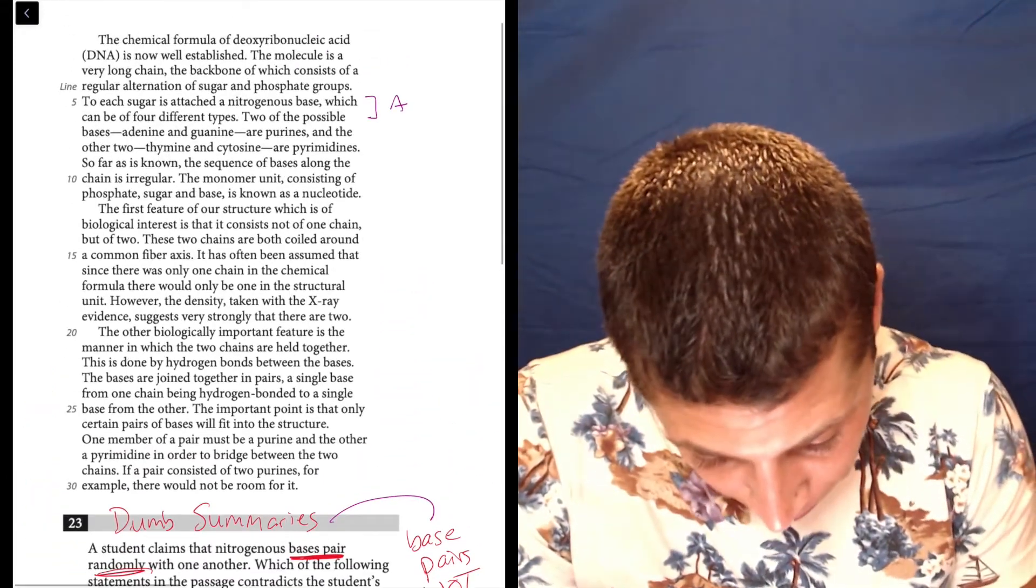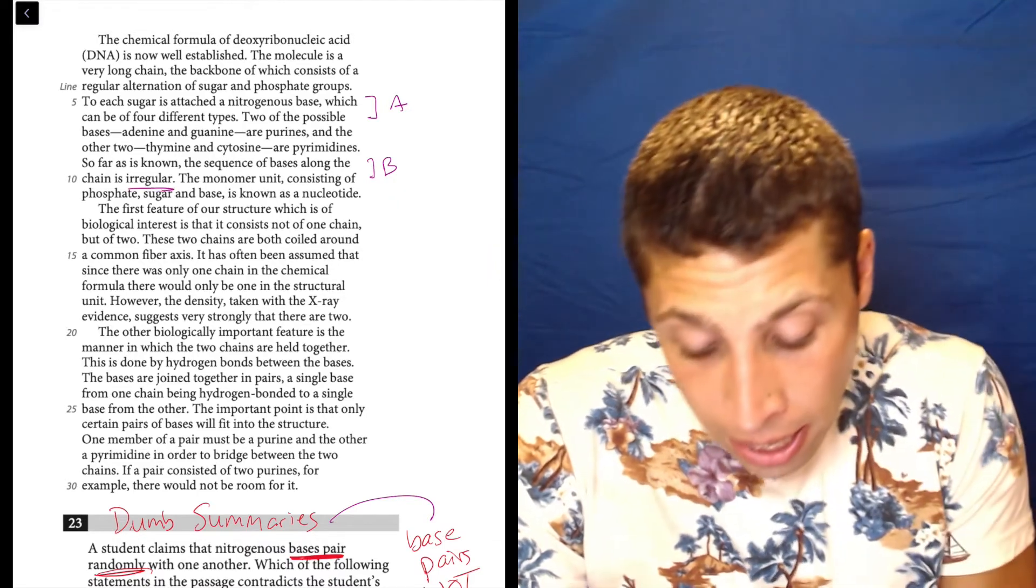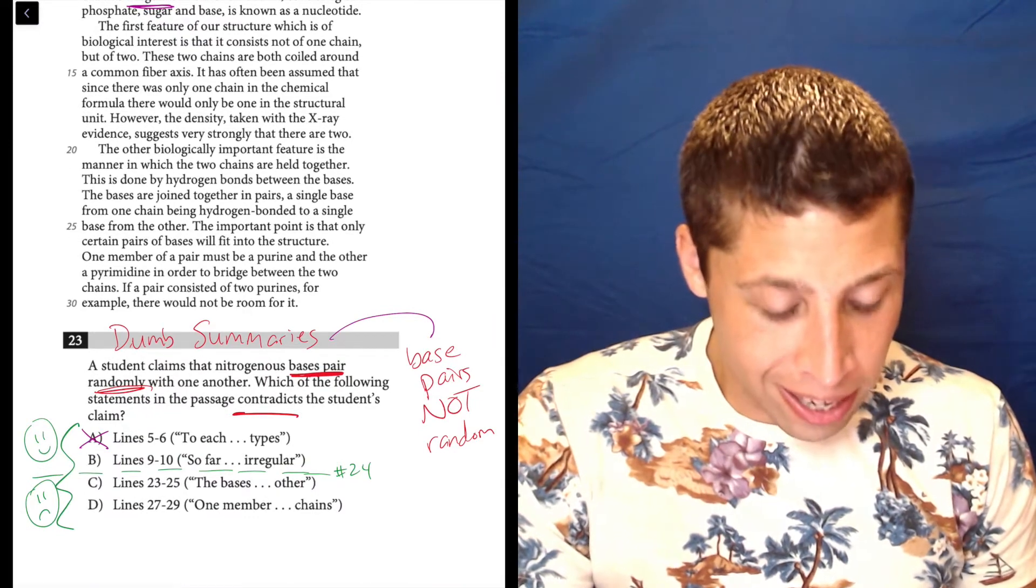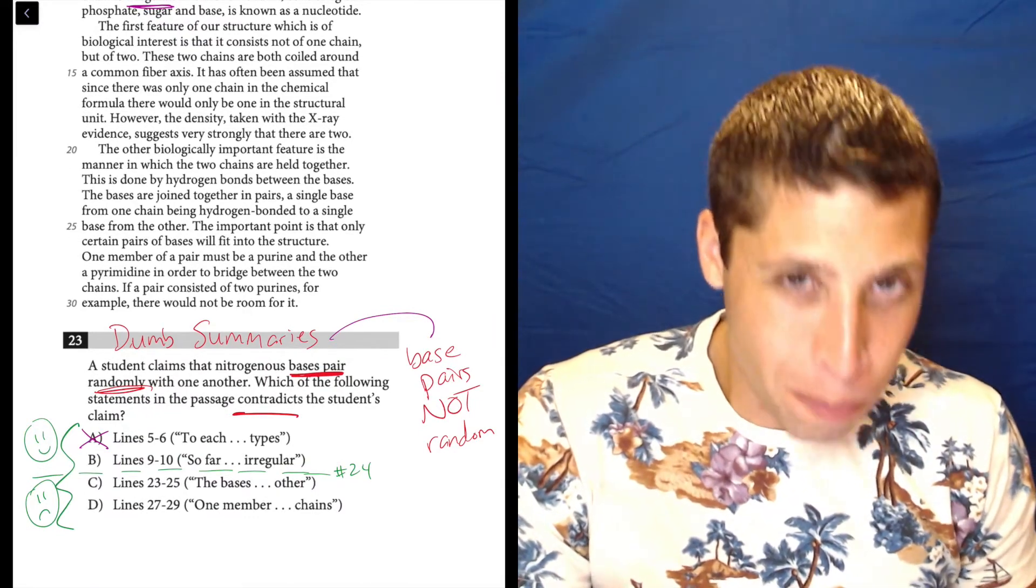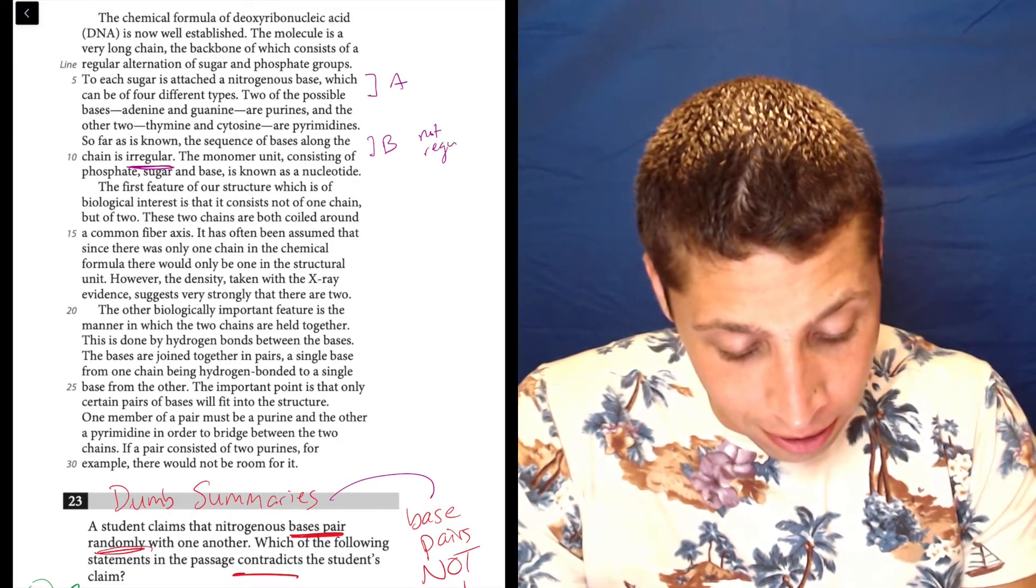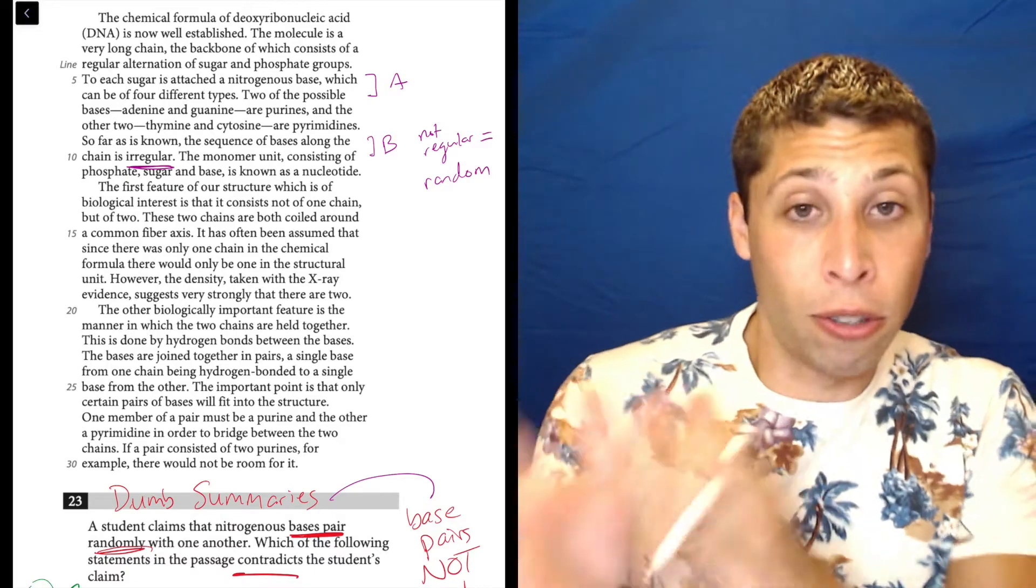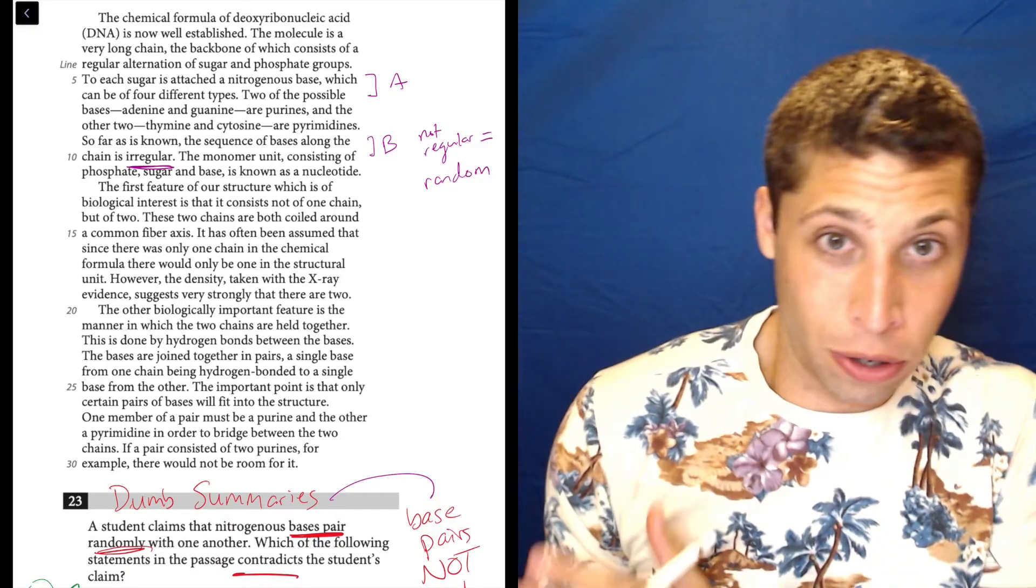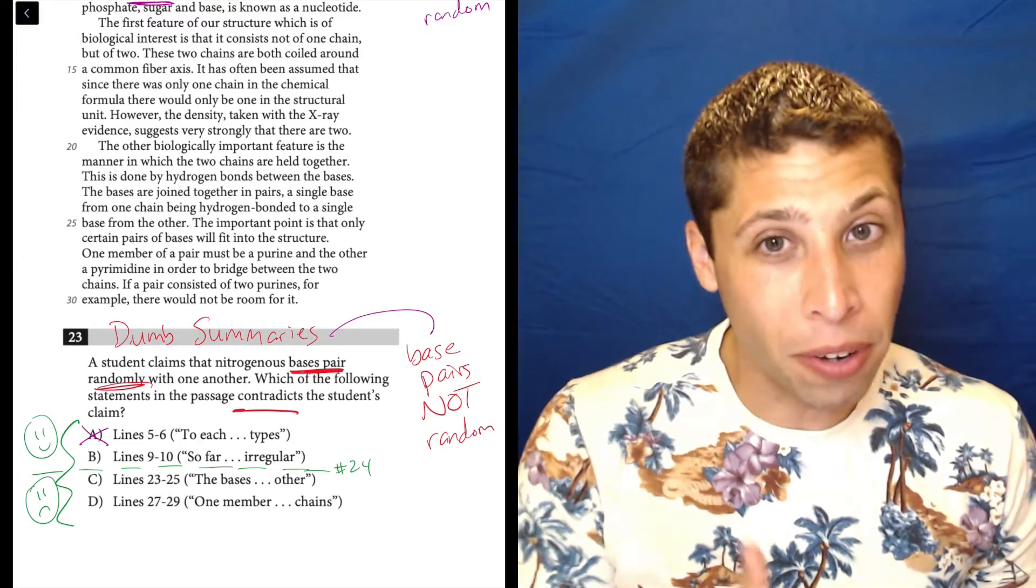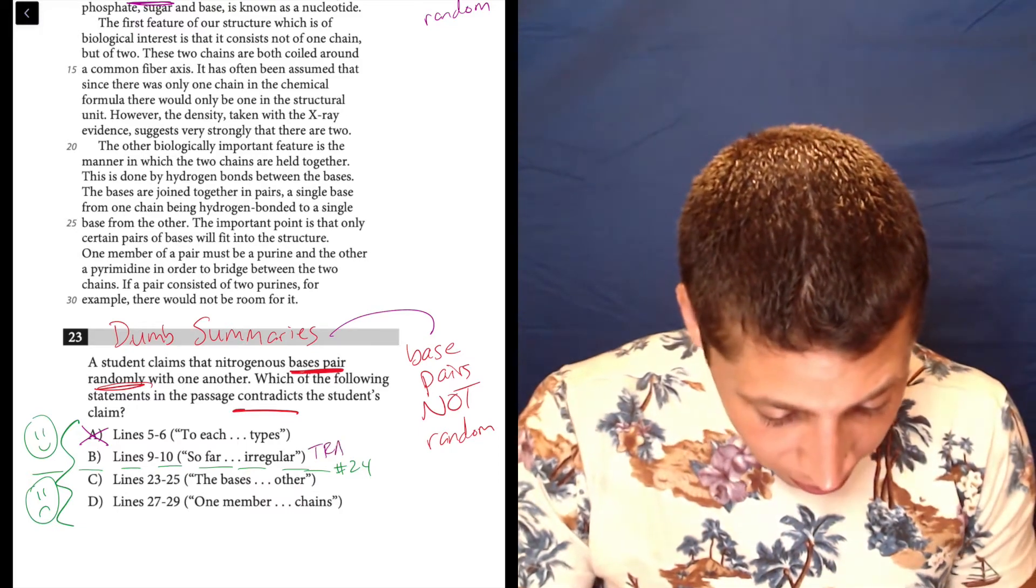Nine through ten. So far as is known, the sequence of bases along the chain is irregular. Irregular. That means not regular. And so that seems to contradict what choice B is saying. Not regular is the same as random. Something's regular, it's in an order. So if it's not ordered, it's random. So this doesn't match. This actually supports what the student is saying, but that's not our task. Remember, we rephrased our task. Our task is to contradict the student. So here's a trap. Clear and simple. This is a trap.